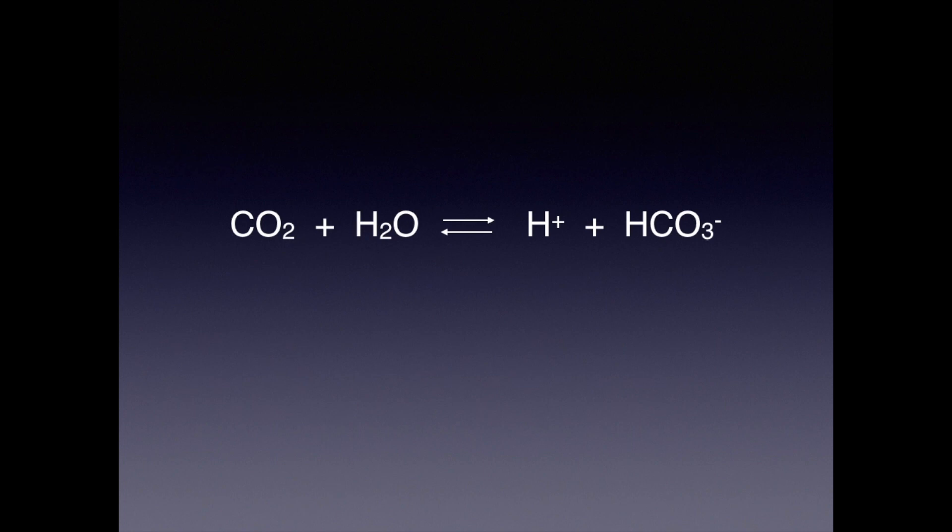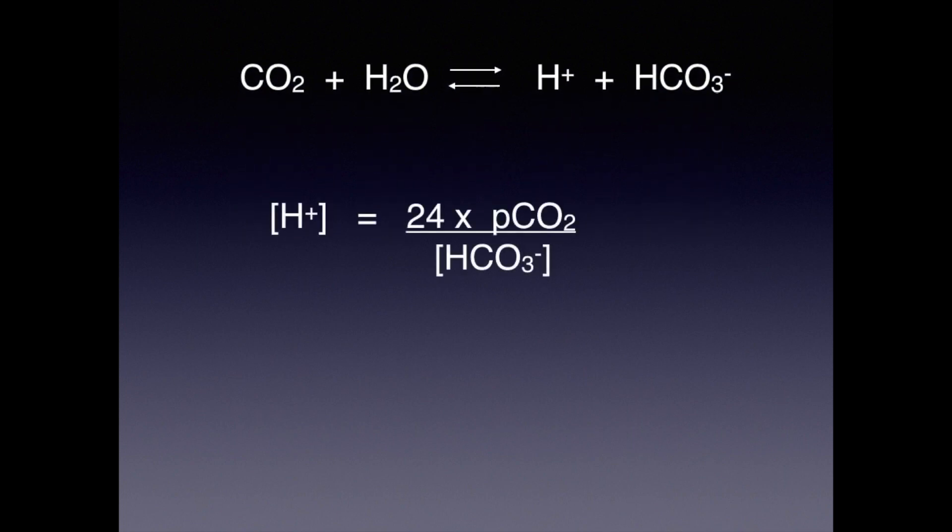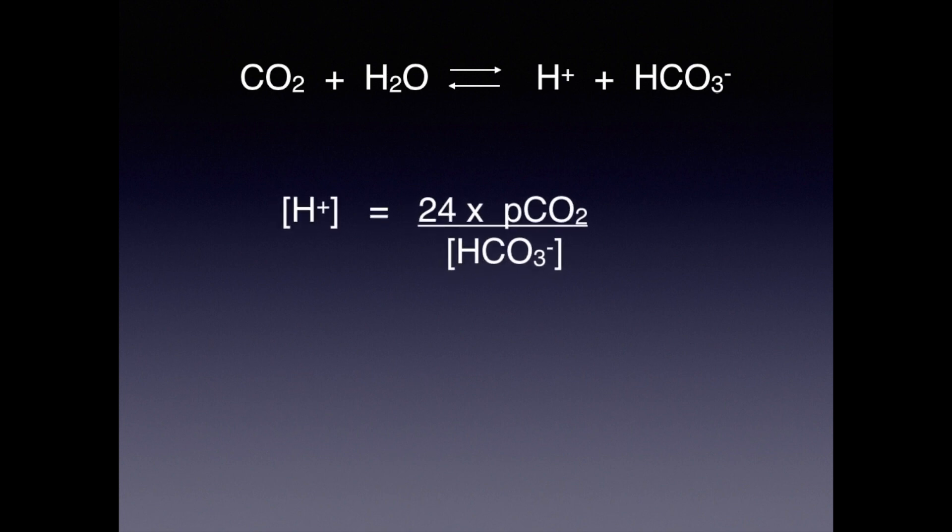This wraps up this video lesson on respiratory physiology where we considered three essential concepts. The first concept is that when CO2 is dissolved in an aqueous solution, there is a chemical equilibrium between CO2, hydrogen ion, and bicarb ion. Since this is a buffer solution, we used the Henderson-Hasselbalch equation, or more precisely the Henderson equation, to obtain this important formula. And finally, we discussed the relationship between pCO2, CO2 production, and alveolar ventilation. We paid particular attention to the inverse relationship between pCO2 and alveolar ventilation.